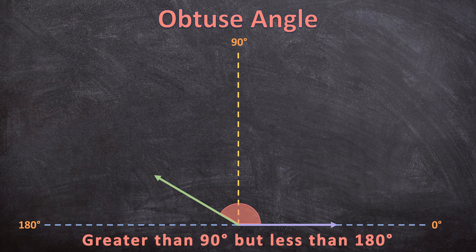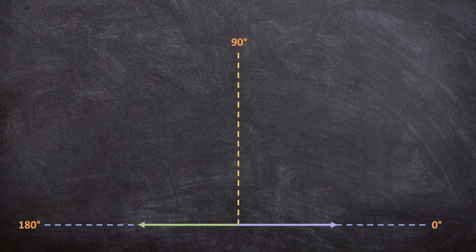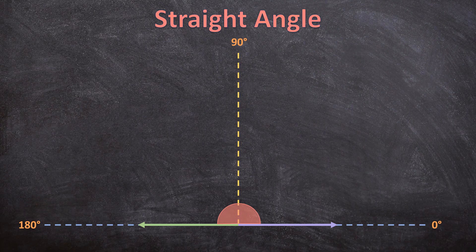Now let's rotate this ray even further until our two rays point in exactly opposite directions, so it looks like they form a straight line. This type of angle is called a straight angle, and a straight angle is exactly 180 degrees.